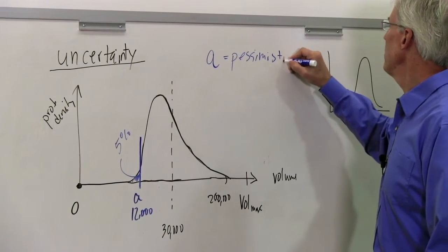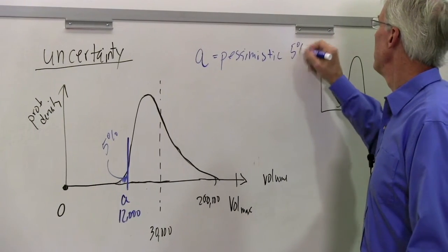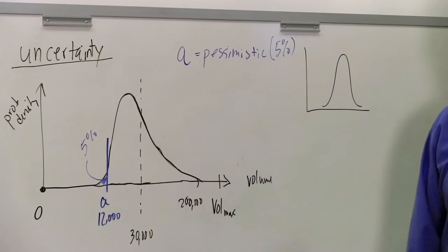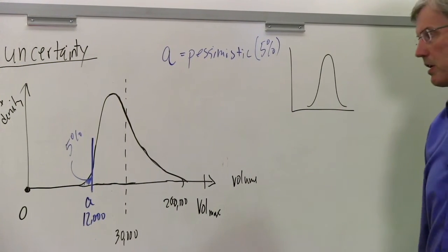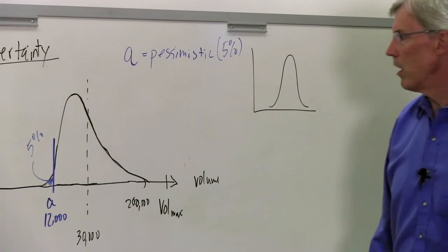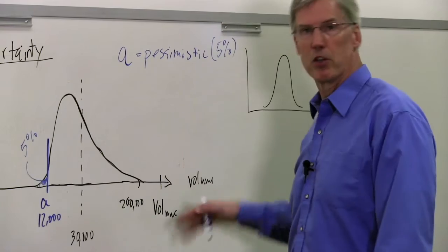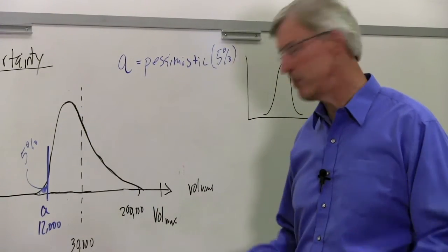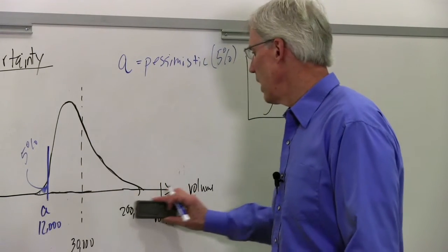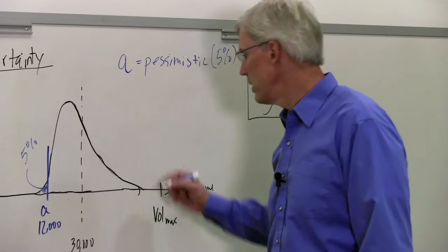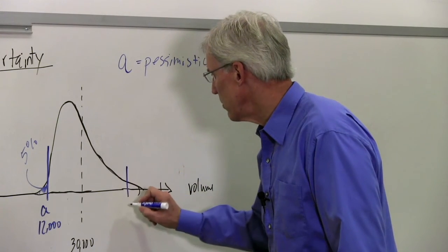And we're going to define it as the number that we think there's only a 5% chance of being lower than. So, the pessimistic number is the 5% number. Only a 5% chance it's lower than that, and 95% chance it's higher than that. Conversely, on the other side, this big number, it could be as high as 200,000. It becomes very hard to say, well I don't know, could it be 500,000? Could it be a million? So let's again, eliminate this idea of an absolute end to our range.